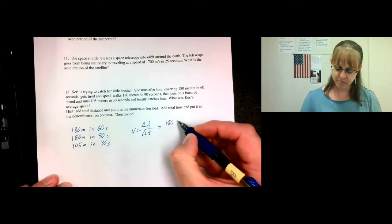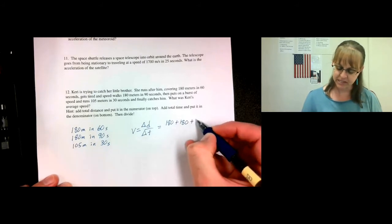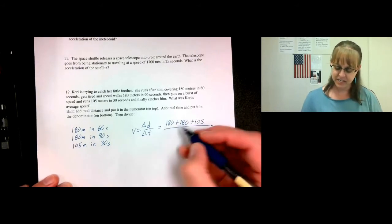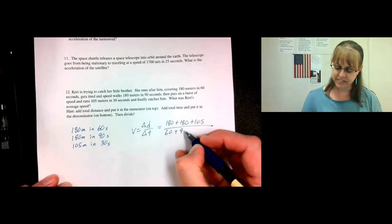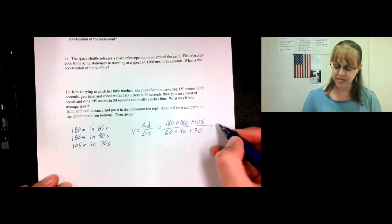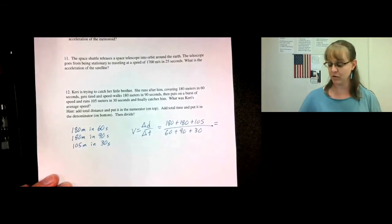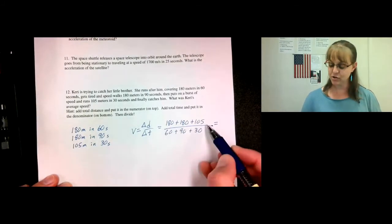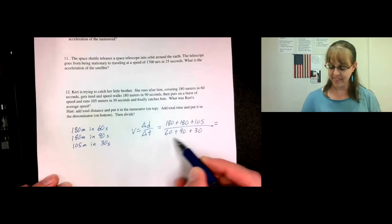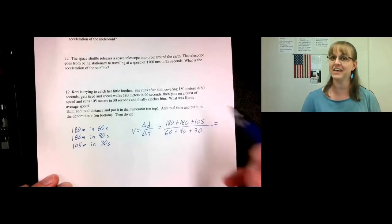We will say 180 plus 180 plus 105 divided by 60 plus 90 plus 30. Now be careful. If you type it into your calculator just the way it is, it will mess you up. You must do your addition first and this addition first and then do your division.